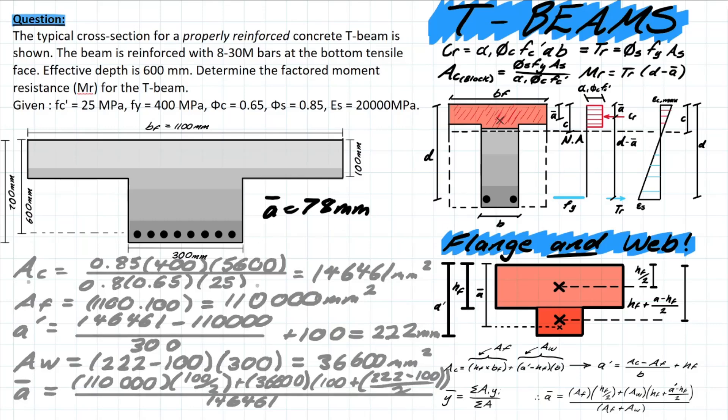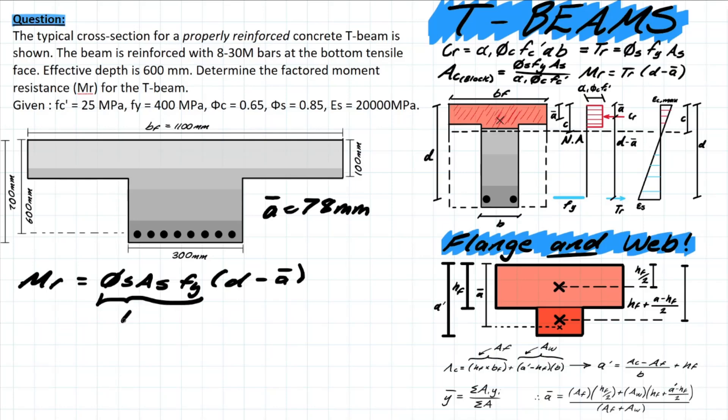Let's take this value and plug it into our MR formula. We have ā, let's simply plug into our formula. We know that it's going to be φs As fy times d minus ā. We know what this value is already, this is TR, so all that is going to be 1904 times 10³ newtons, and then we have the d value which is given at 600 and we're subtracting ā. And solving that and converting to kilonewton meters, it's going to leave you with 994 kilonewton meters.